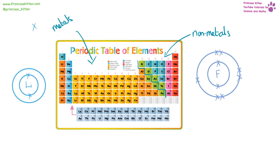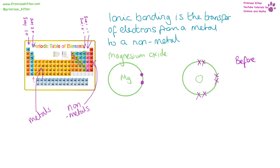Metals are going to lose electrons, and when we lose electrons we get positive charges. Non-metals are going to gain electrons, and when we gain electrons we get negative charges. Things in group one lose one electron — plus one ions. Group two lose two electrons — plus two ions. Group six gain two electrons — minus two ions. Group seven gain one electron — minus one ions. Ionic bonding is the transfer of electrons from a metal on this side of the periodic table to a non-metal on the other side.